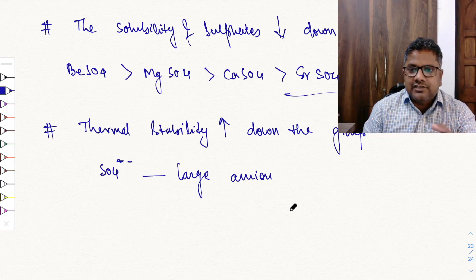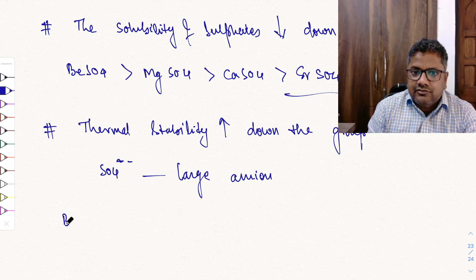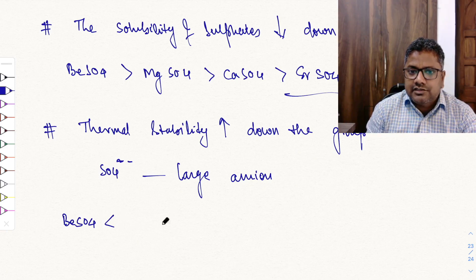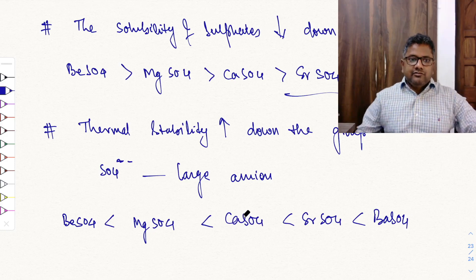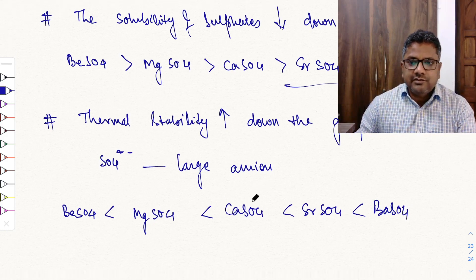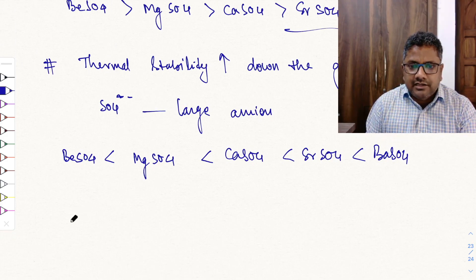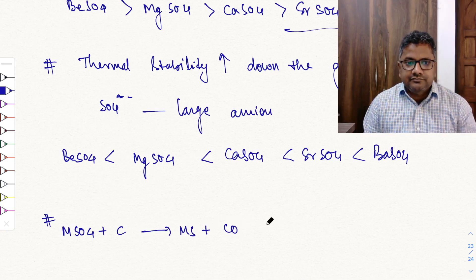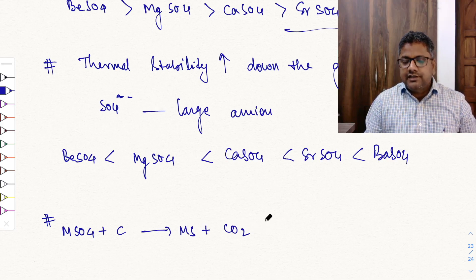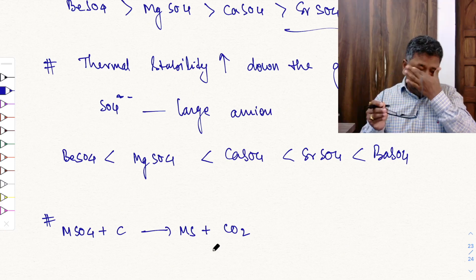A large anion with a large cation gives a stable lattice, so thermal stability of sulphates increases down the group: BeSO4 (least stable) < MgSO4 < CaSO4 < SrSO4 < BaSO4. Metal sulphates can also be reduced with carbon to give metal sulphide (MS) plus CO2.